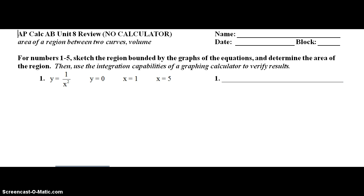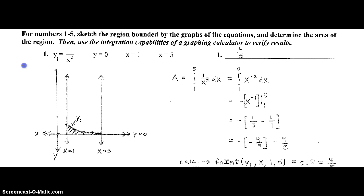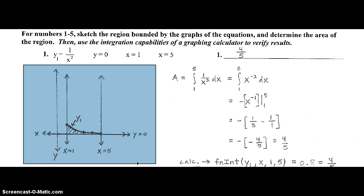At number one, the function is y equals one over x squared. Our second function is y equals zero, which happens to be the x-axis, and x equals one and x equals five. I'm going to jump to the solution document. The first thing you would be expected to do is draw a sketch of this region. I drew a coordinate plane, drew the vertical lines x equals one and x equals five, drew y equals zero through the x-axis, and picked some x values between one and five to find the function. My region is simply the integral of one over x squared with respect to x from one to five.